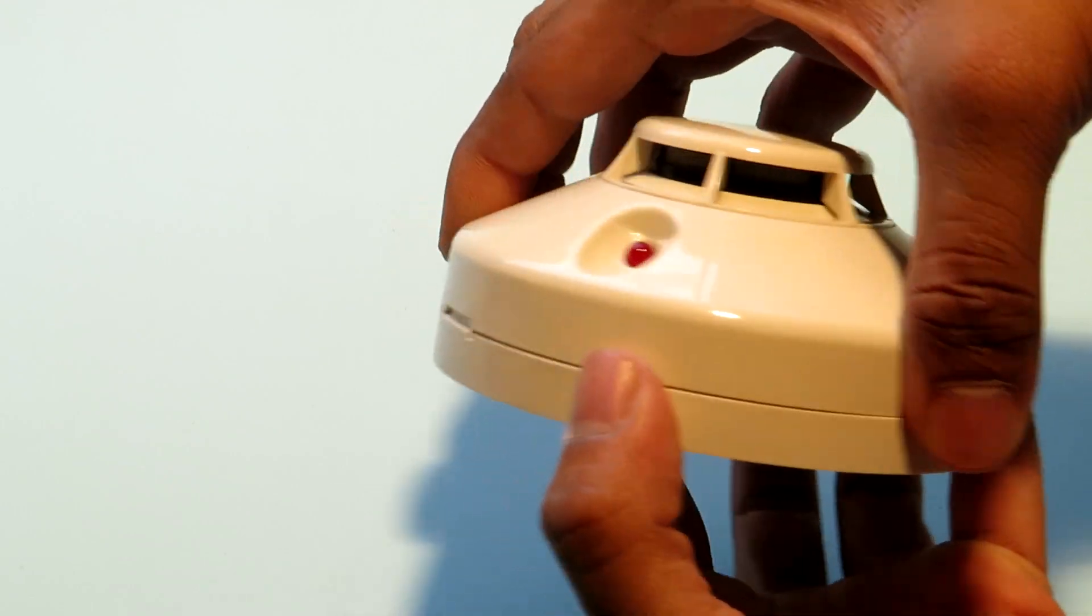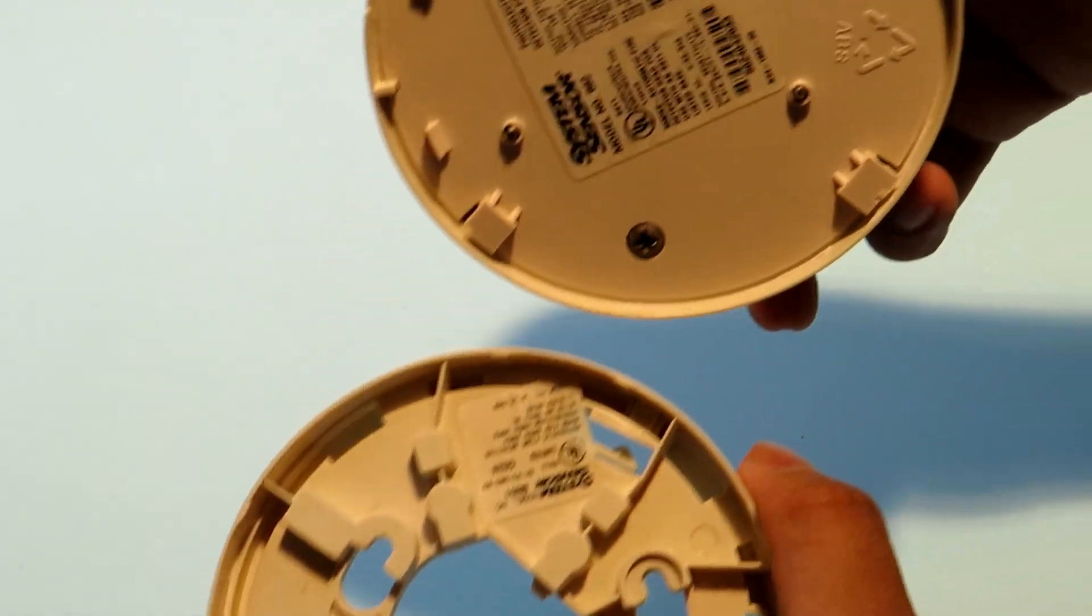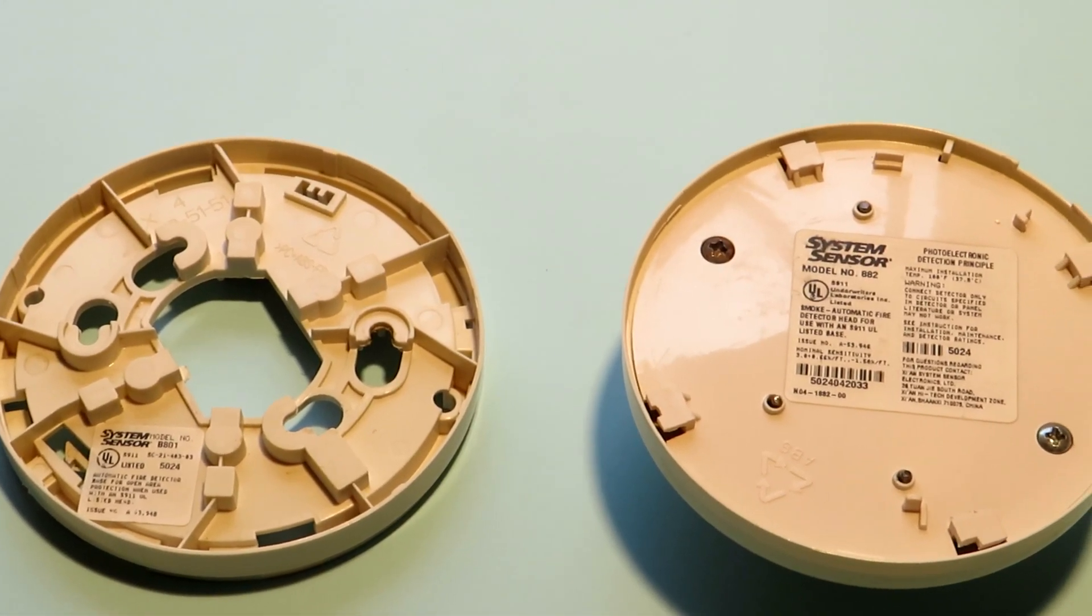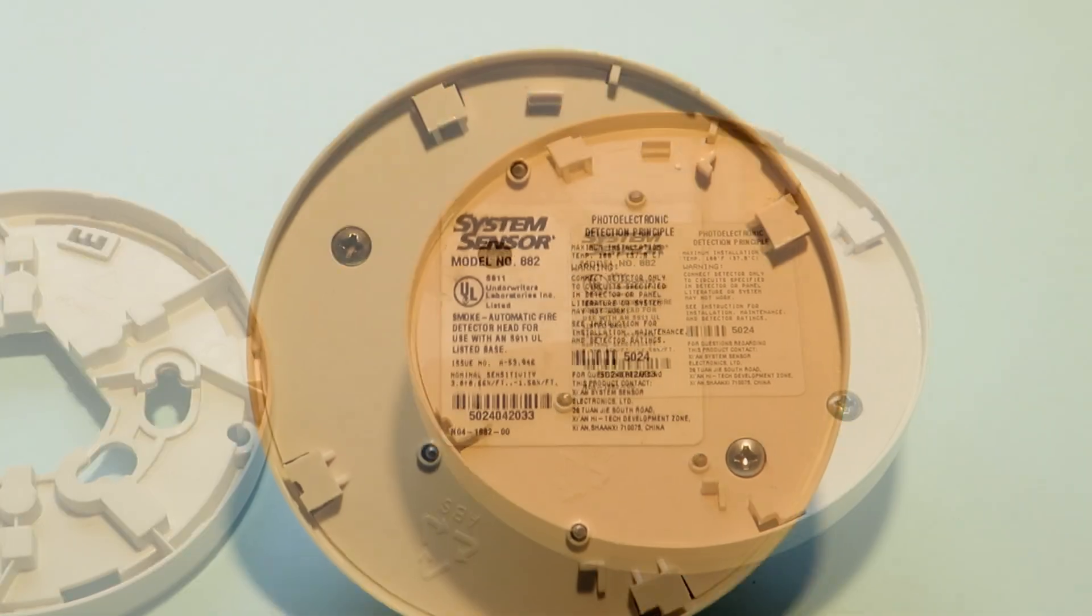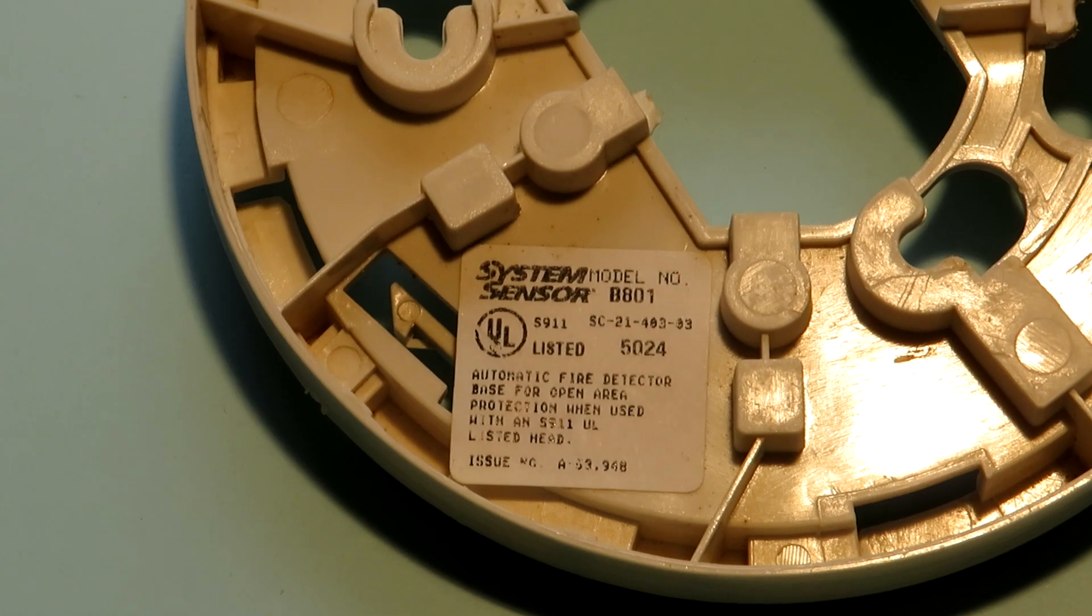So that's enough of theory and now coming to the practical part. This is my smoke detector as you can see and this is manufactured by two companies that is System Sensor and Honeywell India and this is model number 882. You can find the details of your smoke detector on the back side of the detector. You can then take that model number and company and put it on google and you'll get the data sheet of that particular detector.